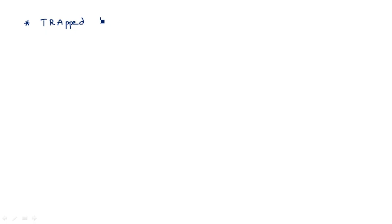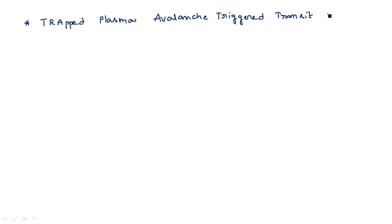In this video I'm going to explain the construction and operation of the TRAPATT diode, which is the second type of avalanche transit time device. TRAPATT stands for Trapped Plasma Avalanche Triggered Transit device.